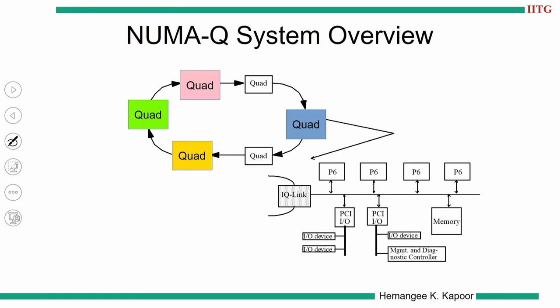We have an SCI ring, which is a unidirectional link on which the quads are connected. Every quad is made up of four Pentium Pro processors connected over the quad bus. They have their own slice of the main memory and the quad is connected to the ring using the IQ link. In this example, I am going to take six quads, with different colors denoting each quad — blue would be one quad, yellow would be another.